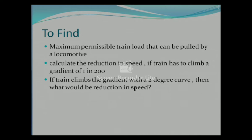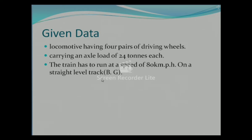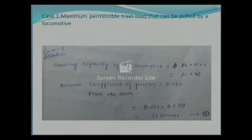The data given in this problem: the locomotive has four pairs of driving wheels carrying an axle load of 24 tons each. The train has to run at a speed of 80 kilometers per hour on a straight level track of broad gauge.